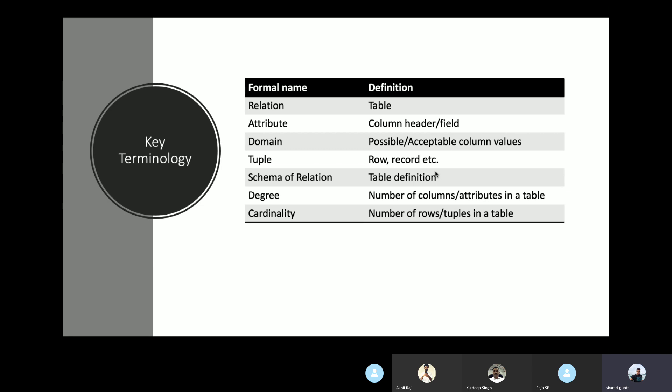Let's talk about the key terminologies in a relational data model. A relation is basically a table — a set of data elements. An attribute is the property that defines a relation; in simple terms it is the column header or field. A domain is a set of possible values accepted by an attribute. For example, for a boolean flag attribute, the domain would be true or false. A tuple is each row in a relation — a record or row is called a tuple.